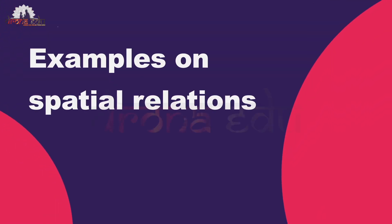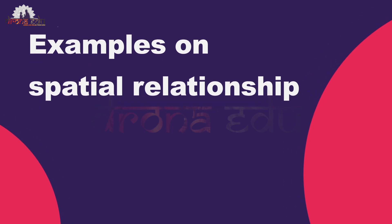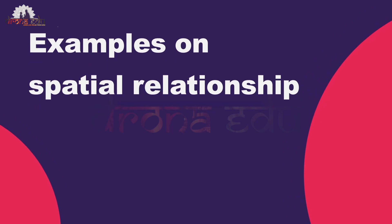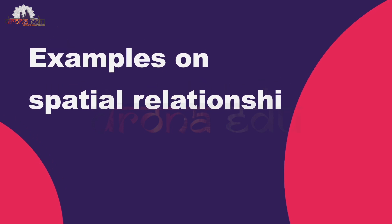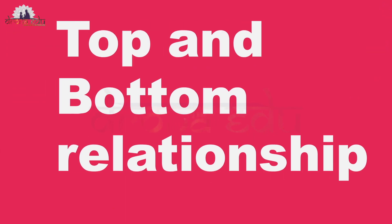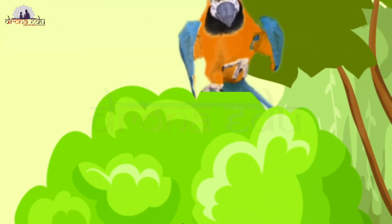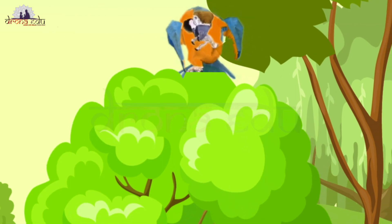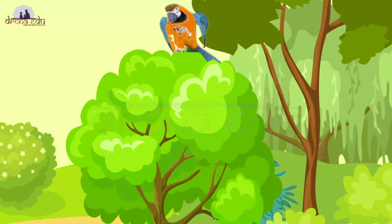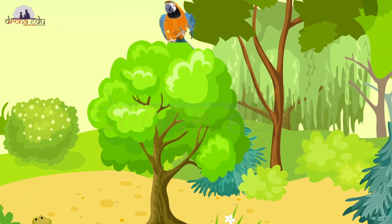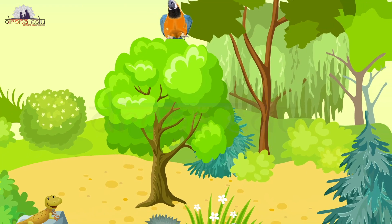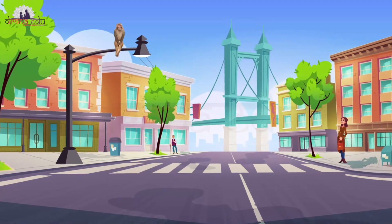Now let us see a few more examples on spatial relations. First, let us see about the top and bottom relation. For example, let me consider these few pictures. In the first picture, you can observe that the bird is sitting on the top of the tree.